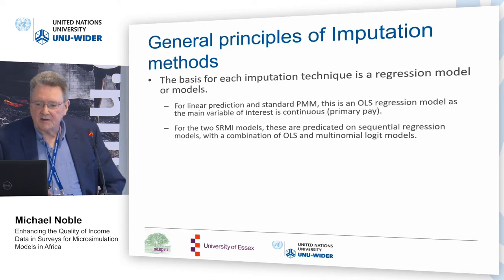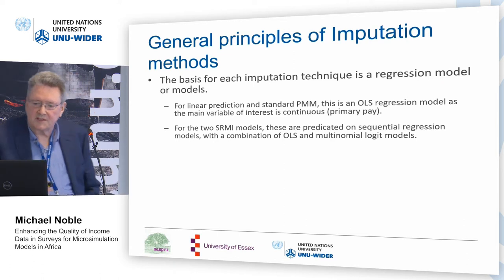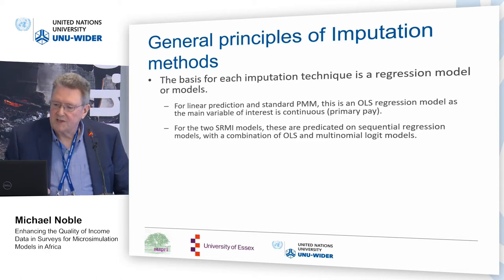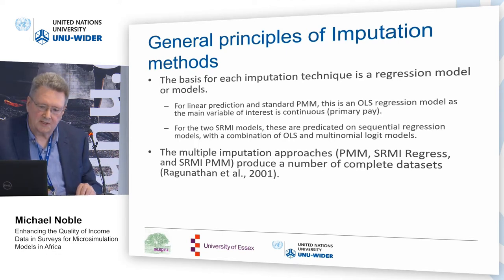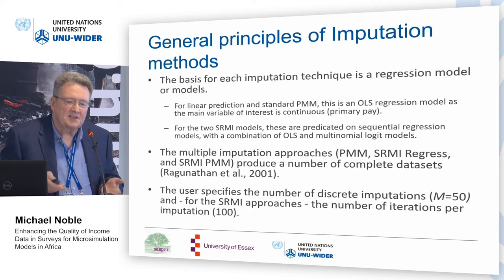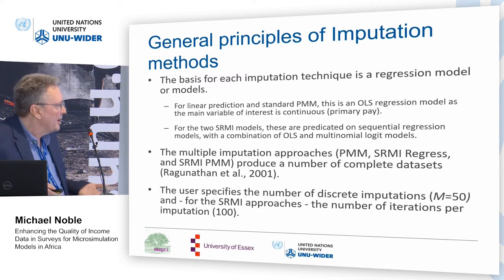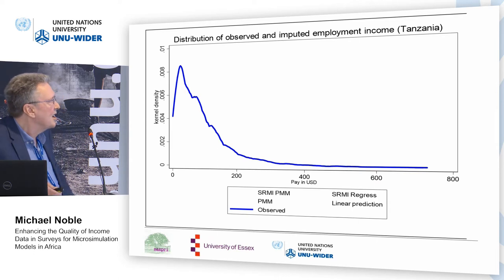The imputation methods are regression-based. For simple linear prediction and standard PMM, this is an OLS regression model where the main variable of interest — primary pay — is continuous. For the two SRMI models, which are predicated on sequential regression, in our case the patterns of missing data required a combination of OLS and multinomial logit models. The essence of multiple imputation is that you produce multiple datasets — one per imputation. We used 50 imputations, and for the SRMI approaches, 100 iterations for each of those 50 imputations.